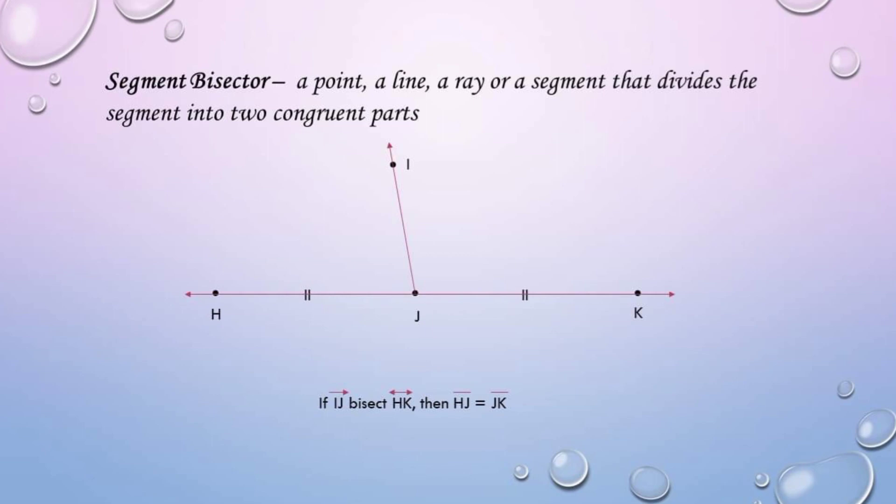And the last one, we have the segment bisector. It is a point, a line, a ray, or a segment that divides the segment into two congruent parts. If ray IJ bisects line HK, then segment HJ is equal to segment JK.